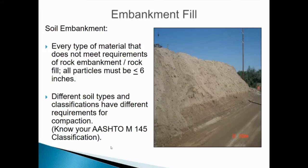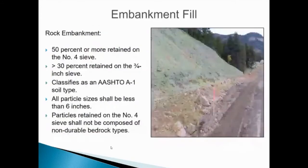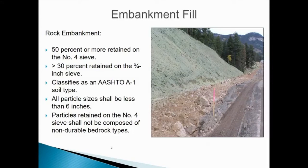It is very important that you know your AASHTO M145 classification system so you know which soil classifications are compacted in which ways. The second type is rock embankment, which must meet all of these criteria: 50% or more retained on the number four sieve, more than 30% retained on a three-quarter-inch sieve, must classify as AASHTO A1 — no more than 25% fines and a plasticity index no greater than six, all particle sizes less than six inches, and particles retained on the number four sieve shall not be composed of non-durable bedrock types.